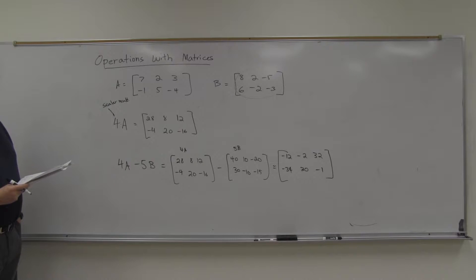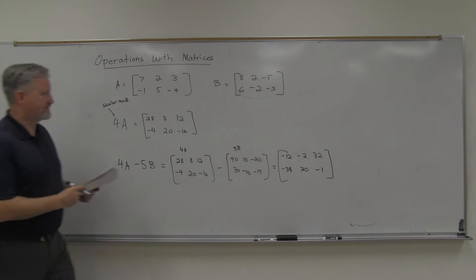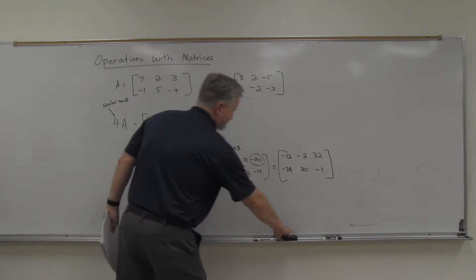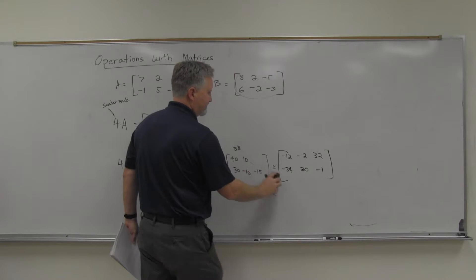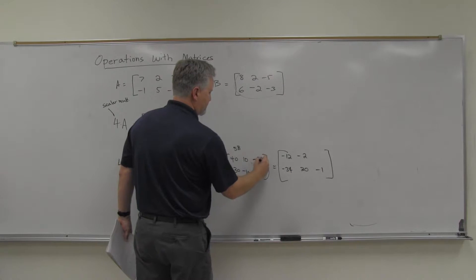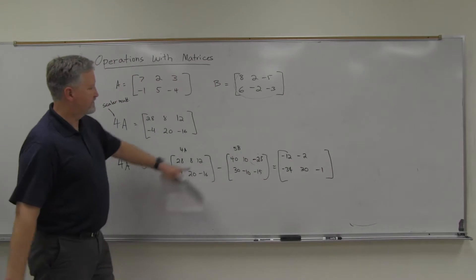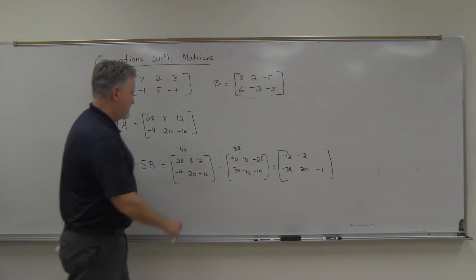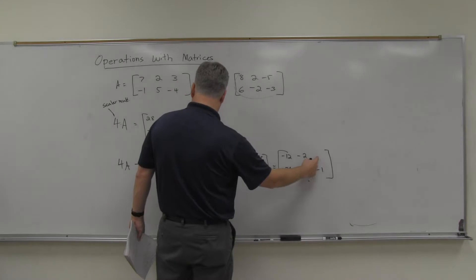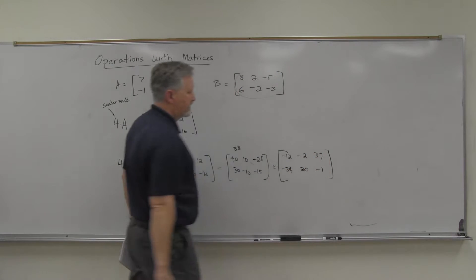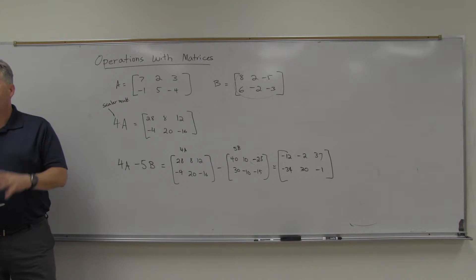Correction: I initially wrote negative 20 for 5 times negative 5, but it should be negative 25. So 12 minus negative 25 is actually 37, not 32. The rest looks okay.